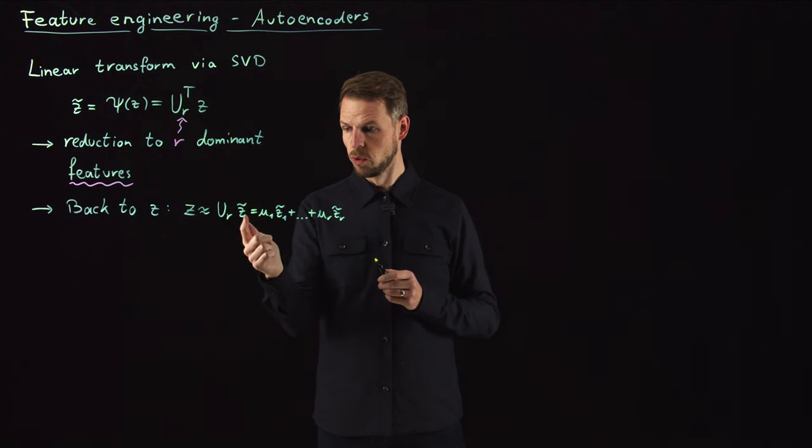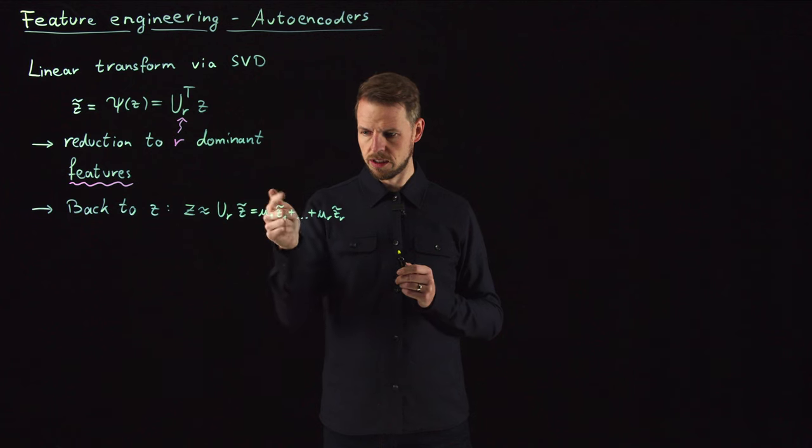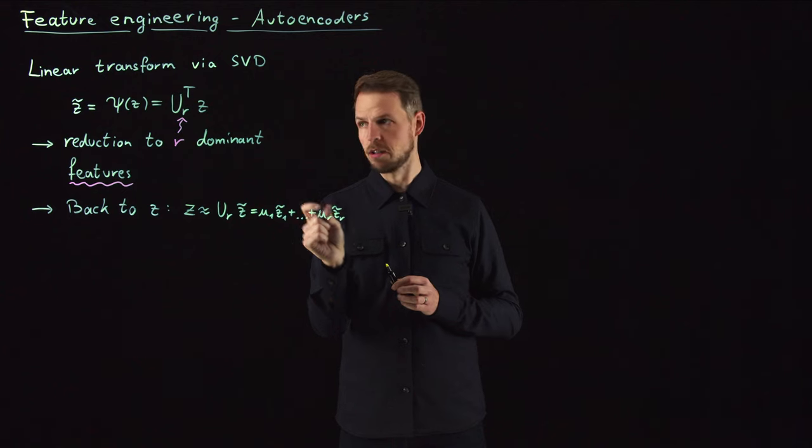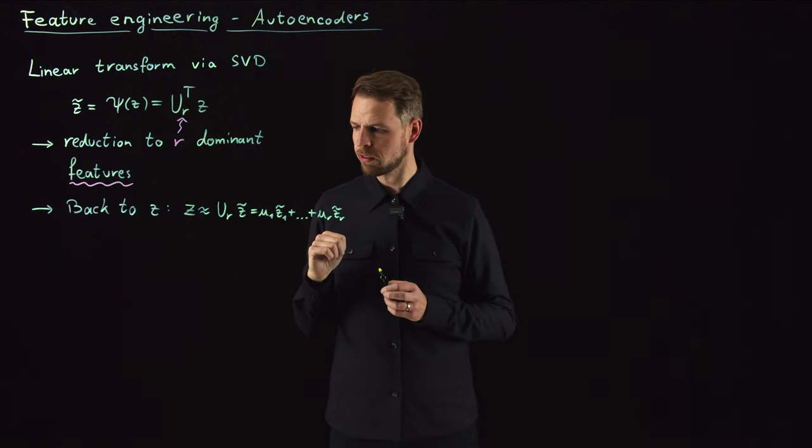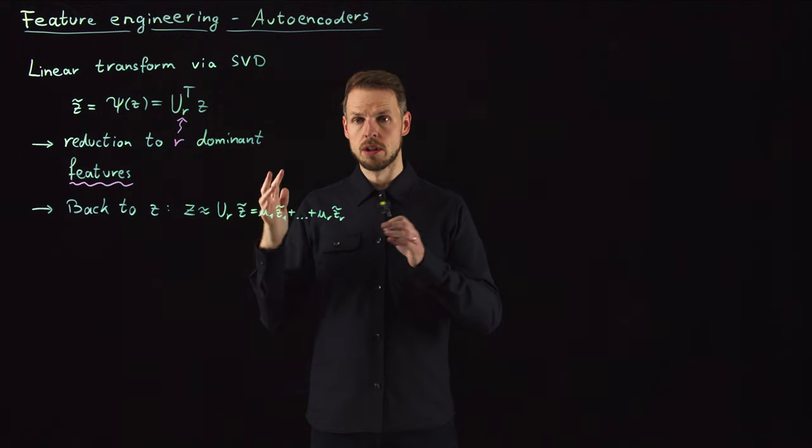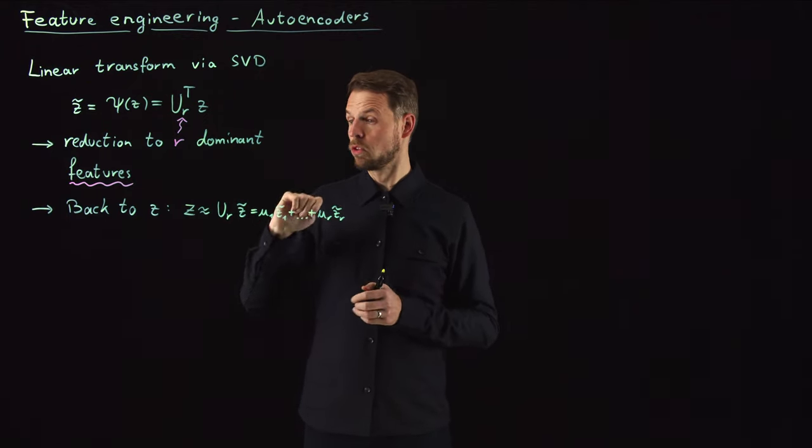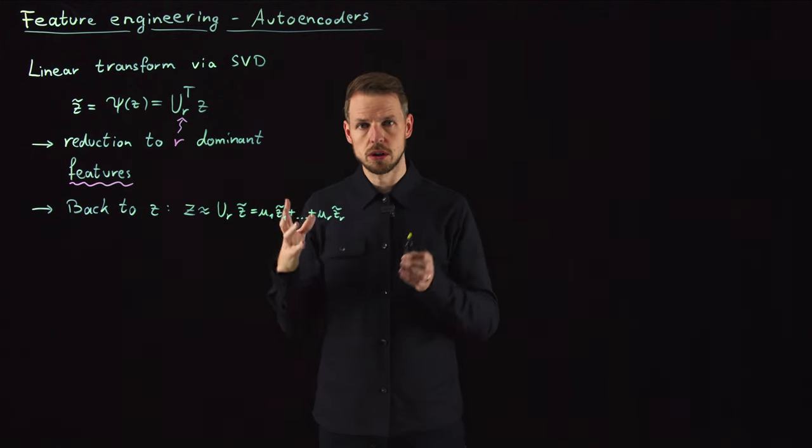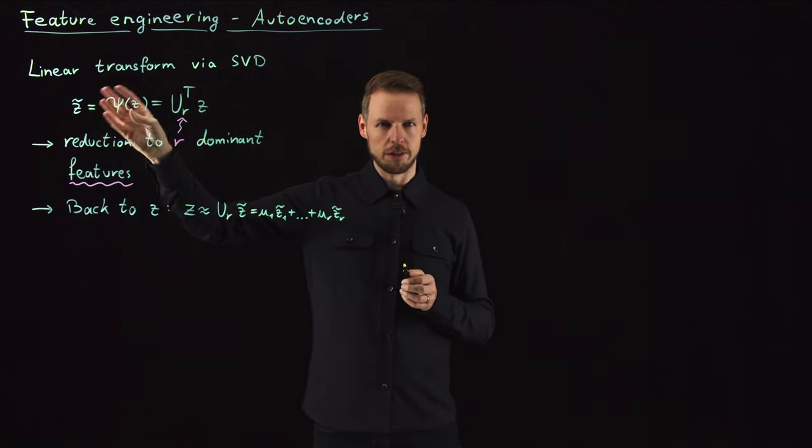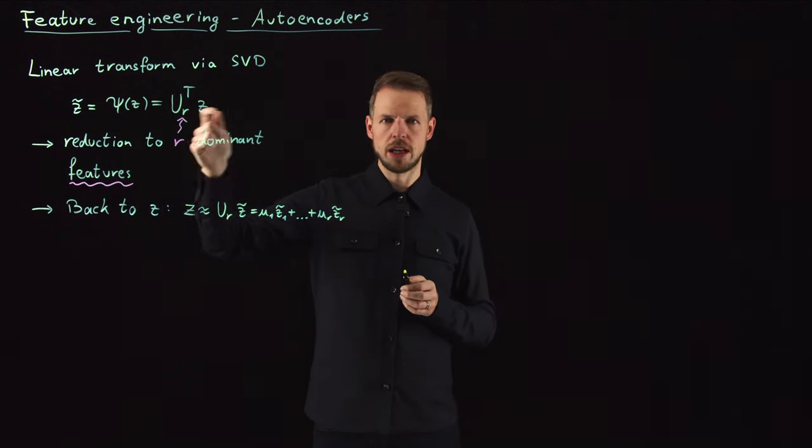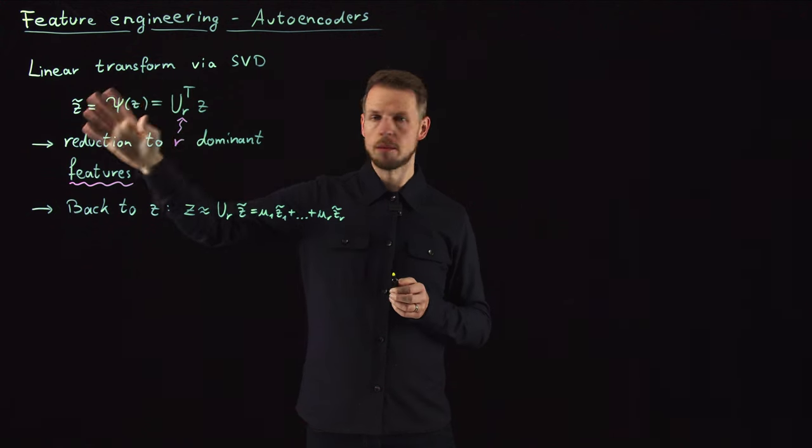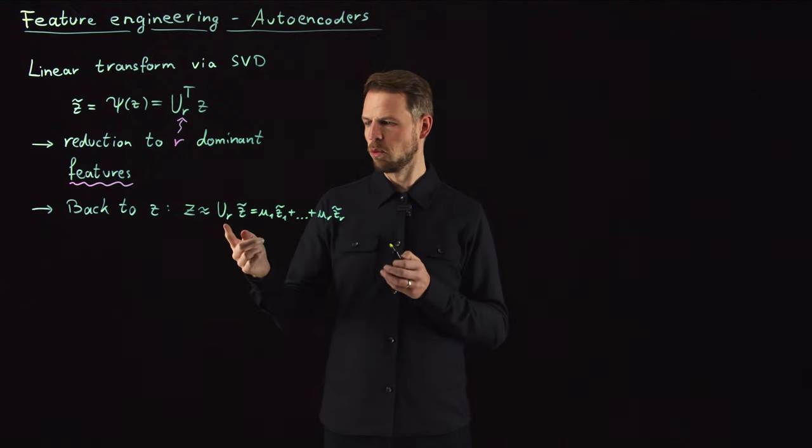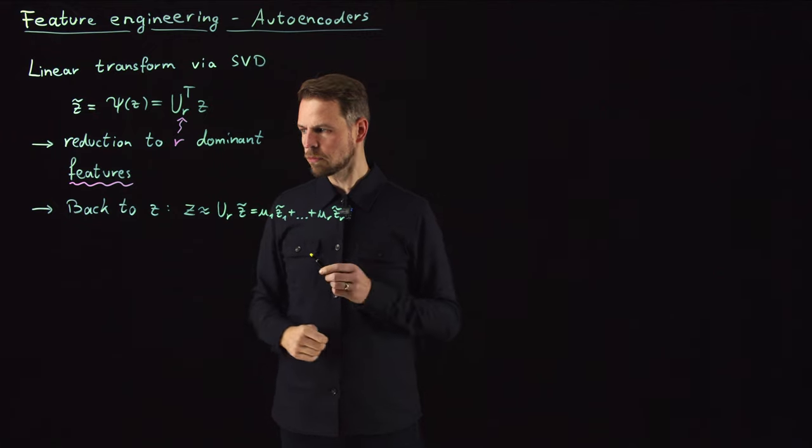You take your reduced state Z, the features Z tilde 1 to Z tilde R, and these are just our coefficients for the associated basis functions or the columns of our U matrix. This takes us back to the full state, the original state. The second step is only a post-processing step. What you would usually want to do is extract these features that hopefully have more meaning than the individual entries of Z, and then do some sort of learning on these reduced features. To have an interpretation in terms of the original input, this is the way back to the full-size data.